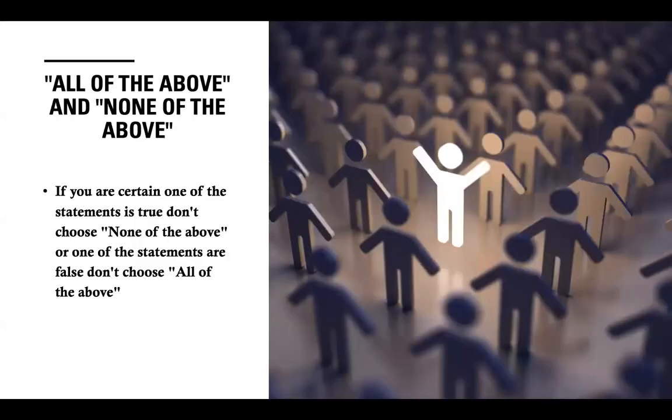The all of the above or none of the above rule. Always remember this. If you are certain. Let's highlight this. If you are certain one of the statements is true. One of the choices is true. Then, always remind yourself, do not choose none of the above. Why? You already know that one of the choices is true. Even if you don't know the other choices, by testmanship, you know the correct answer cannot be none of the above. Next. Once you read one of the choices is false. Even if you don't know or you're not sure of the other choices. But you're certain with at least one false choice. Automatically, do not choose all of the above as the answer.